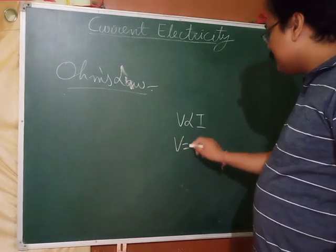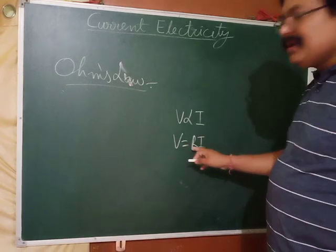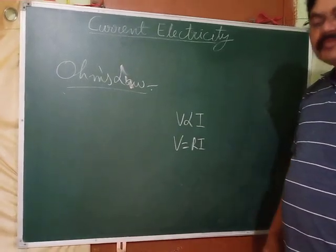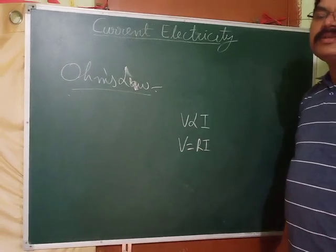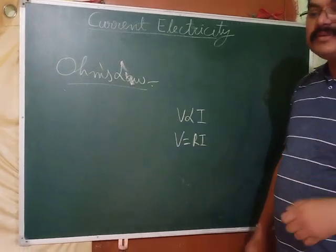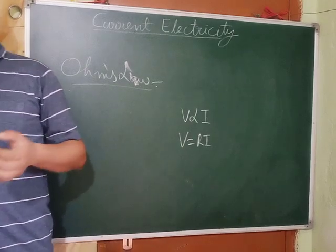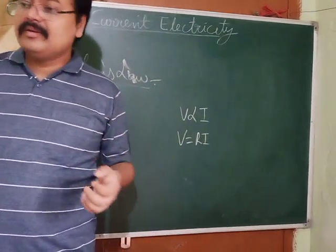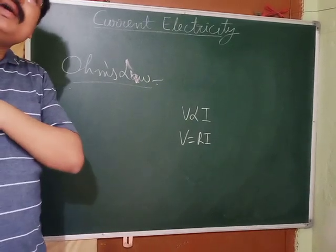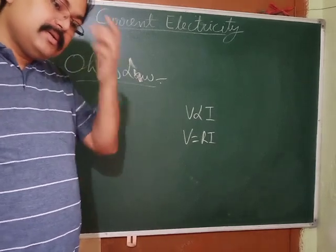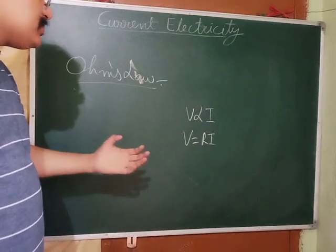Removing the proportional sign gives V = IR, where R is the resistance offered by the circuit to the flow of current through it. It remains constant for a given conductor at constant temperature.